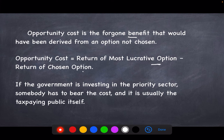For example, if a government is investing in a priority sector — for example in education or in infrastructure — and there is not any immediate gain, but if the government had chosen to invest in a factory there would have been immediate gains. So the gains that have been forgone for the investment in the priority sector — who bears that cost? That cost is borne by the tax paying public.